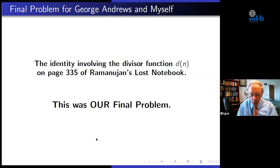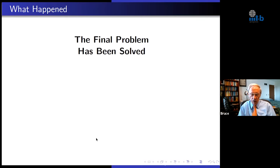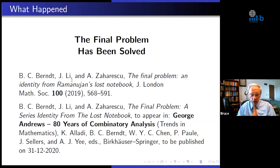Coming back to the identity in Ramanujan's Lost Notebook — when Andrews and I were, over a period of many years, examining the entries in the Lost Notebook, the last one remaining was actually this formula of Ramanujan. We couldn't prove it. Sun Kim, Zaharescu, and I had worked on this for several years. The theorem we proved was with the order of summation reversed, and this was our final problem. Fortunately, the final problem has been solved — it was solved by Zaharescu, his student Junxian Li, and myself. We borrowed Watson's term and called our paper 'The Final Problem: An Identity from Ramanujan's Lost Notebook,' published in the Journal of the London Mathematical Society last year.